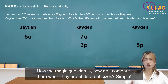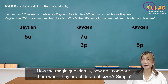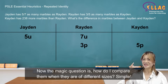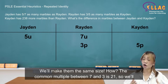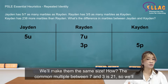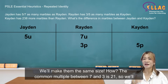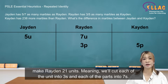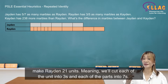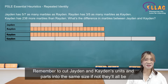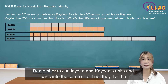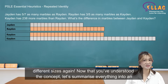Now the magic question is, how do I compare them when they're of different sizes? Simple — we'll make them the same size. The common multiple between 7 and 3 is 21, so we'll make Raiden 21 units. We'll cut each of the units into 3s and each of the parts into 7s. Remember to cut Jayden and Kayden's units and parts into the same size, otherwise they will all be of different sizes again.